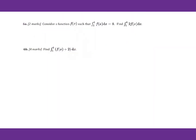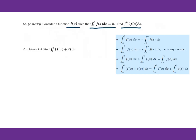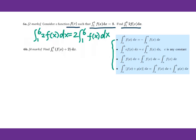Problem 6a: Consider a function f of x such that the integral from 1 to 6 of f of x dx equals 8. Find the integral from 1 to 6 of 2f of x dx. Using properties of definite integrals, you can write this as 2 times the integral from 1 to 6 of f of x dx, which equals 2 times 8 equals 16.